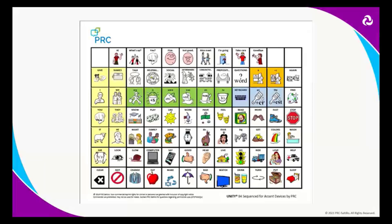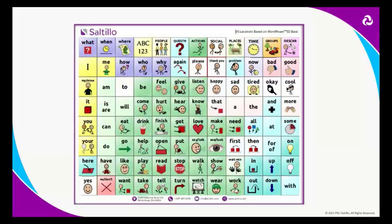The next two slides show examples of the low tech boards you can download through the materials tab or from the PRC Saltillo website. The first is a Unity 84 sequence two low tech board. Tonight we'll specifically be going through the Word Power vocabulary file, so Heather will be showing how to model using that. If your client uses Unity or LAMP Boards for Life, you can use that low tech board as well — it's for any device your AAC user is using. We don't want to make this device-specific; these strategies apply to any AAC user.